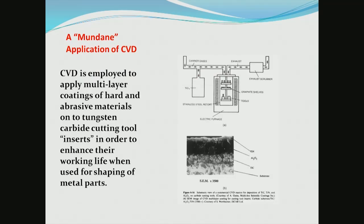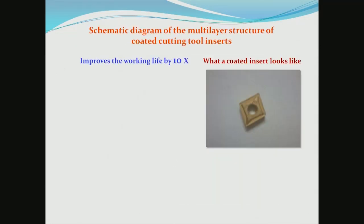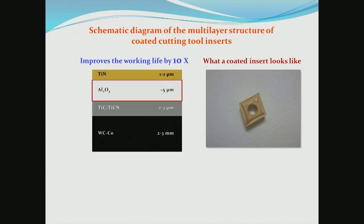At the end of the last class I pointed out a mundane application of the chemical vapor deposition process: making coatings on cutting tool bits for the machine shop. A typical cutting tool bit for cutting high speed steel consists of a coating of tin nitride giving its golden glow, beneath that a layer of aluminum oxide measuring about 5 micrometers, and beneath that a titanium carbon nitride coating — all sitting on top of several millimeters of a tungsten carbide cobalt substrate. This aluminum oxide layer at the top enhances the lifetime of the cutting tool by a factor of as much as 10.